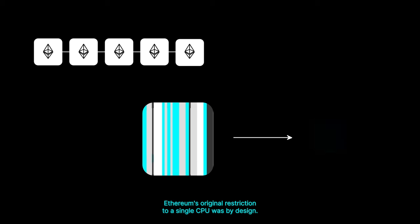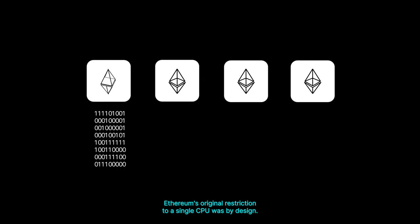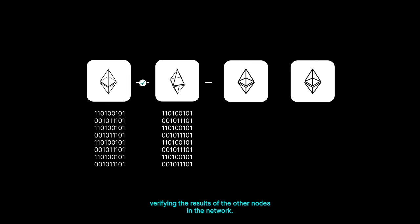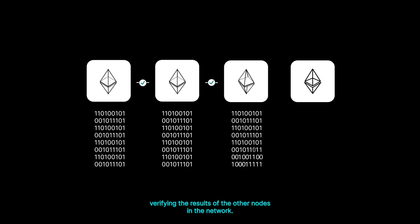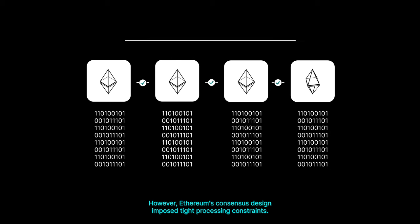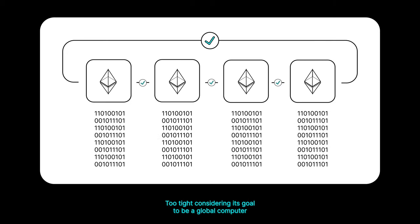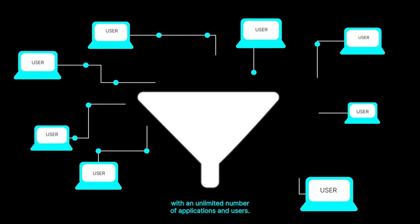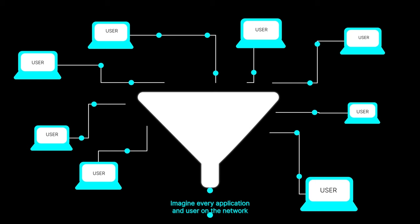Ethereum's original restriction to a single CPU was by design. Why? Because to achieve consensus, every Ethereum node needed to rigorously execute the same operations, verifying the results of the other nodes in the network. However, Ethereum's consensus design imposed tight processing constraints — too tight considering its goal to be a global computer with an unlimited number of applications and users.